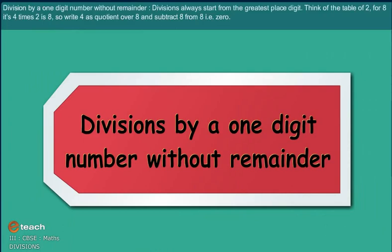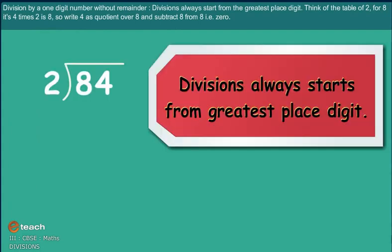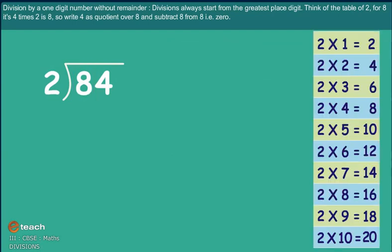Division by a one-digit number without remainder. Information box: division always starts from greatest place digit. Think the table of 2. For 8, it's 4 times 2 is 8. So write 4 as quotient over 8 and subtract 8 from 8 is 0.